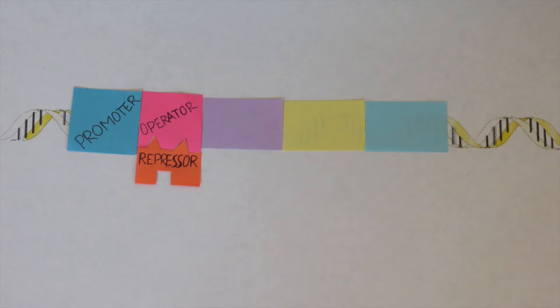The repressor component is what prevents the RNA polymerase from actually traveling down the DNA by blocking it from getting any further than the promoter that it initially attached to.